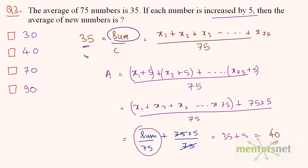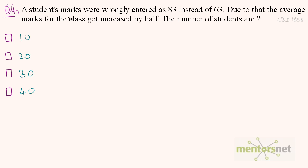So the new average is 40. The final question: a student's marks were wrongly entered as 83 instead of 63. Due to that, the average marks for the class got increased by half. The number of students are?